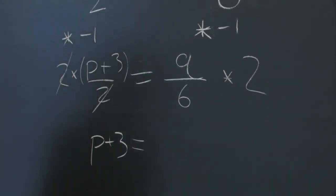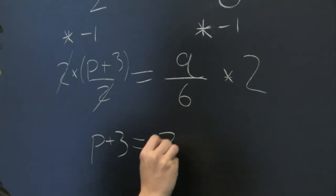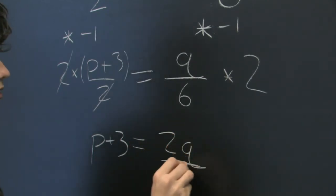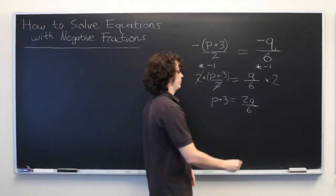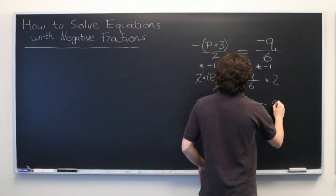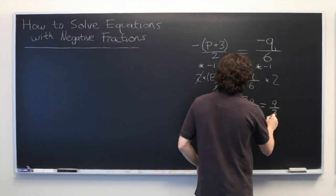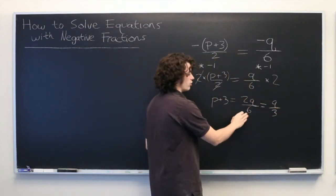But what happens on the other side? Well, first you could write it as 2 times q over 6. But note that 2 over 6 is the same as 1 third, since 6 is 2 times 3.